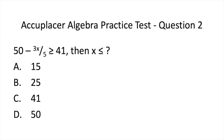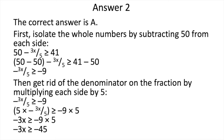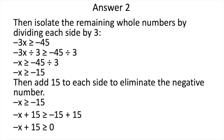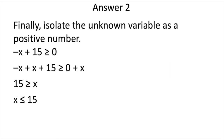Let's go to the ACCUPLACER Algebra Practice Test Question 2. Now pause to solve. The correct answer is A. First, isolate the whole numbers by subtracting 50 from each side. Then get rid of the denominator on the fraction by multiplying each side by 5. Then isolate the remaining whole numbers by dividing each side by 3. Then add 15 to each side to eliminate the negative number.